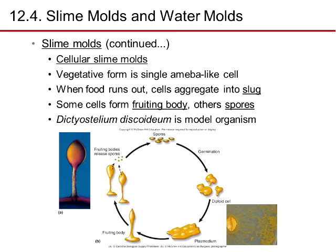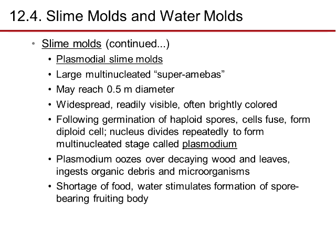There are two types of slime molds: cellular and plasmodial. Cellular slime molds have a vegetative form of a single amoeba-like cell. When food runs out, the cells aggregate into a slug, forming spores and then a fruiting body. Dictyostelium discoideum is a model organism for this. The fruiting bodies release haploid spores; these combine and form diploid cells, which produce the plasmodium and then the fruiting body again — a cycle of sexual and asexual reproduction.